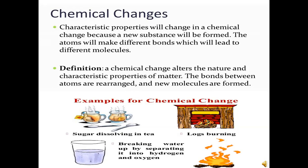Some examples of chemical changes include sugar dissolving in tea, wood burning, and electrolysis — separating water into hydrogen and oxygen. These are all examples of chemical changes.